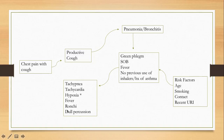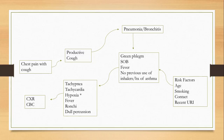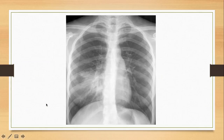Patients may also have rhonchi on chest auscultation, and if it is lobar consolidation, you will see dullness to percussion. The diagnostic tests of choice are chest X-ray and CBC. The white count will be high, and there may be a left-sided shift, especially in very young and very old patients. Chest X-ray will show consolidation, and CBC is helpful not only to make the diagnosis but also to monitor treatment response.